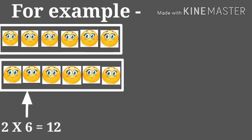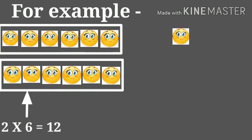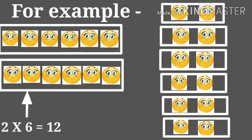So two times six is equal to twelve. On the other side, how many groups do we have? We have six groups and there are two smileys in each group. So six times two is equal to twelve.